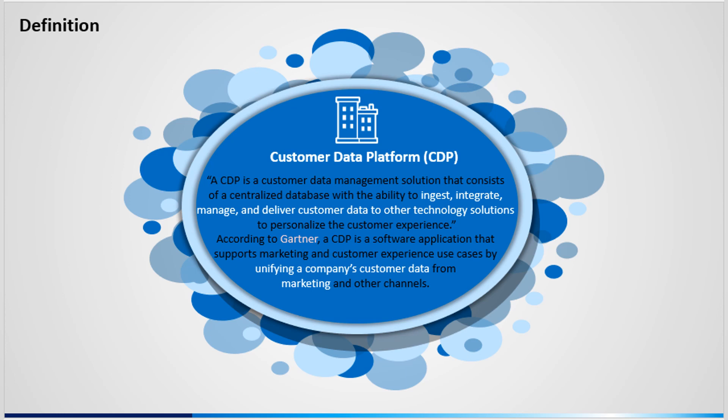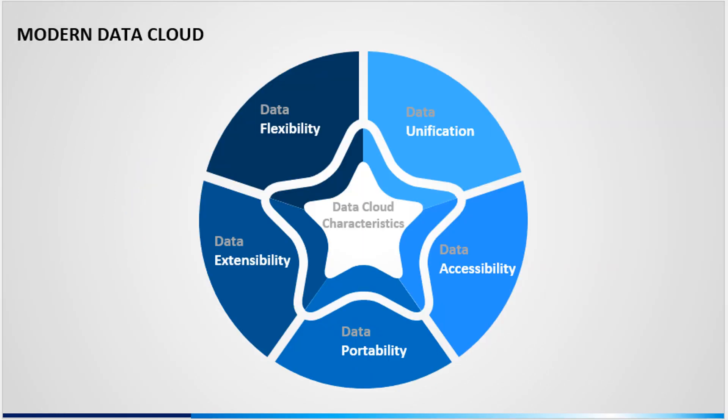Spoiler alert: unifying transactional and analytical data is also possible in the new Salesforce Data Cloud. So after taking into account Alan Cohen's Forbes article, what Snowflake built out, and the more recent definitions of the data cloud by AWS, Oracle, Google, and others, I've come up with a list of five characteristics that I believe describe the modern data cloud: data flexibility, data unification, data accessibility, data portability, and data extensibility.